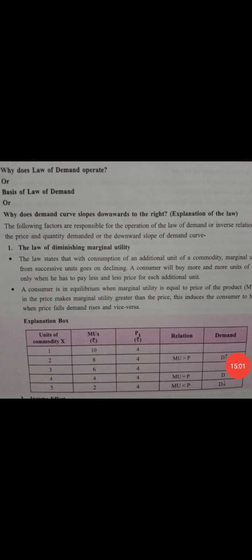Looking at the table: in starting conditions, marginal utility of the commodity is greater than the price. As we move to the third or fourth unit, marginal utility and price become equal. Beyond that, marginal utility becomes less than the price. This is because of the Law of Diminishing Marginal Utility. This was our first point. In the next video, we will study the second reason why the Law of Demand operates. Thank you, have a nice day.